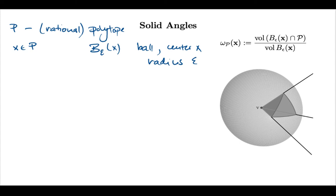Let me make a few comments. I'll start with an example. So this is now in general dimension. If x is in the interior of the polytope with small enough ε our ball will be inside the polytope and that means we're measuring angle one.